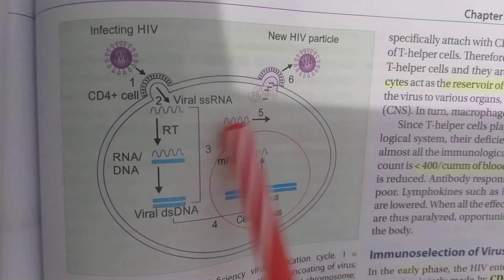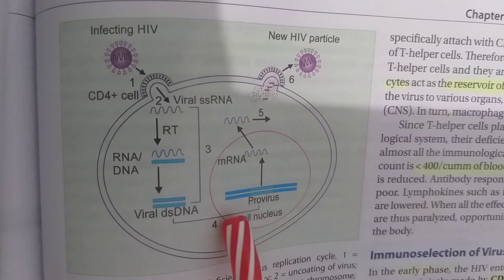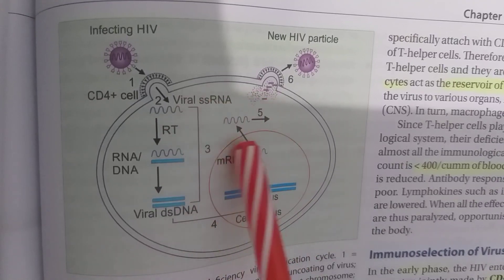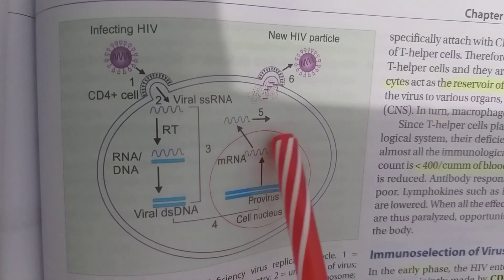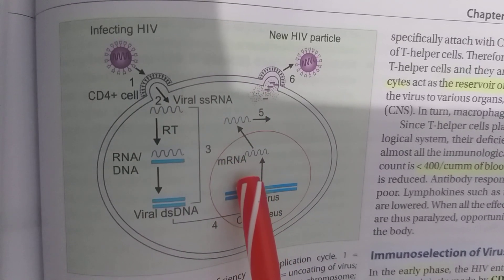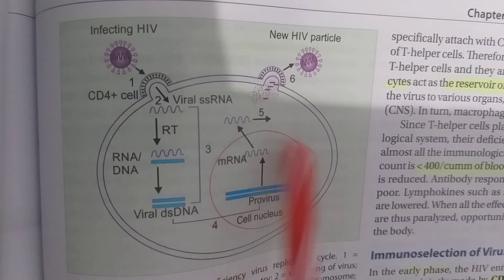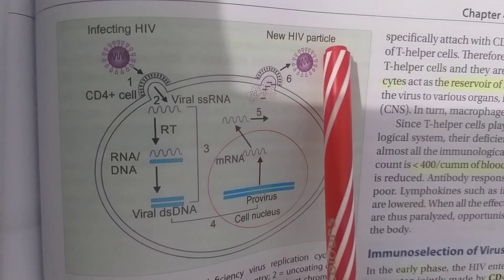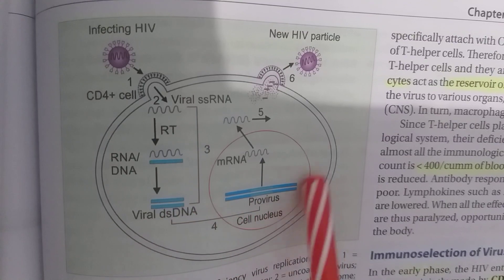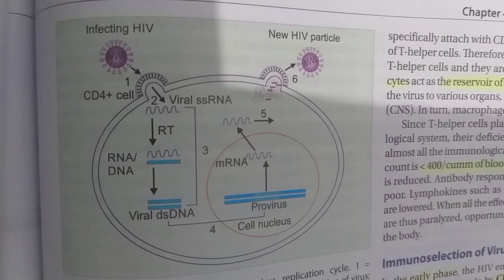The proviral DNA is incorporated into the host cell DNA. During the host cell's transcription process, this proviral DNA gets transcribed. The resulting RNA molecules combine with other viral components and exit the cell through exocytosis — making the target cell act like an HIV factory.